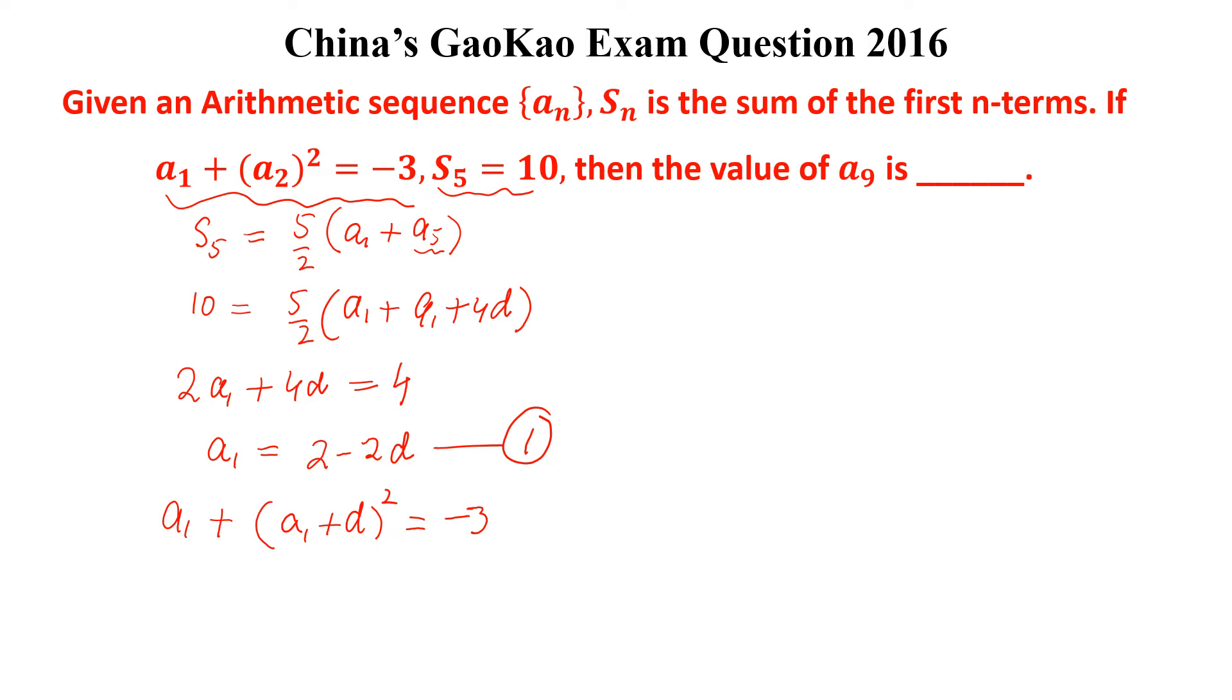And a_1 is 2 - 2d, so this is 2 - 2d + (2 - 2d + d)² = -3. We will simplify this and we will get 2 - 2d + (2 - d)² = -3. Simplify more: 2 - 2d + 4 + d² - 4d = -3.